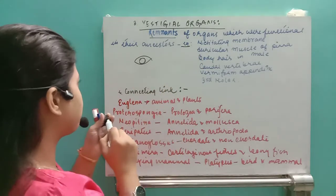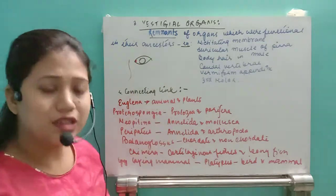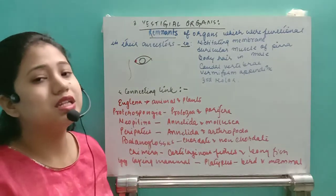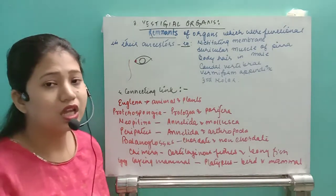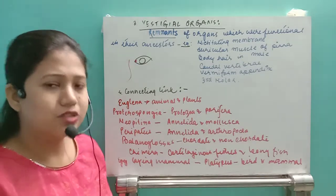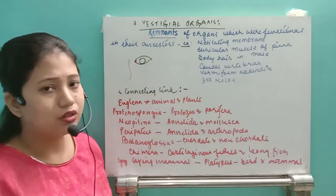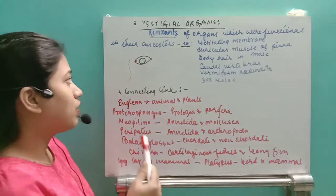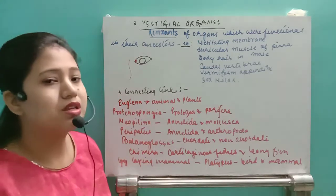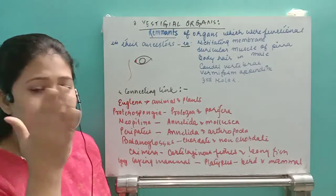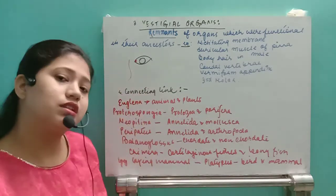Some examples of vestigial organs: the first is the nictitating membrane. In the eye, towards the inner corner, there is a small red dot — that is the nictitating membrane. It is a horizontal flap which is functional in fishes, amphibia, and reptiles, and also found in birds, but in mammals it is present as a vestigial, non-functional organ. In aquatic organisms it is functional, allowing them to see underwater.